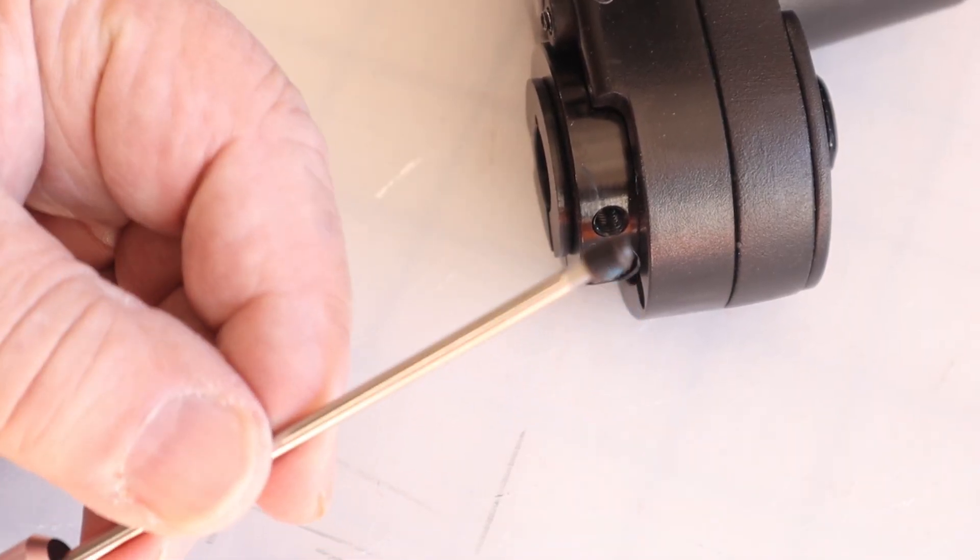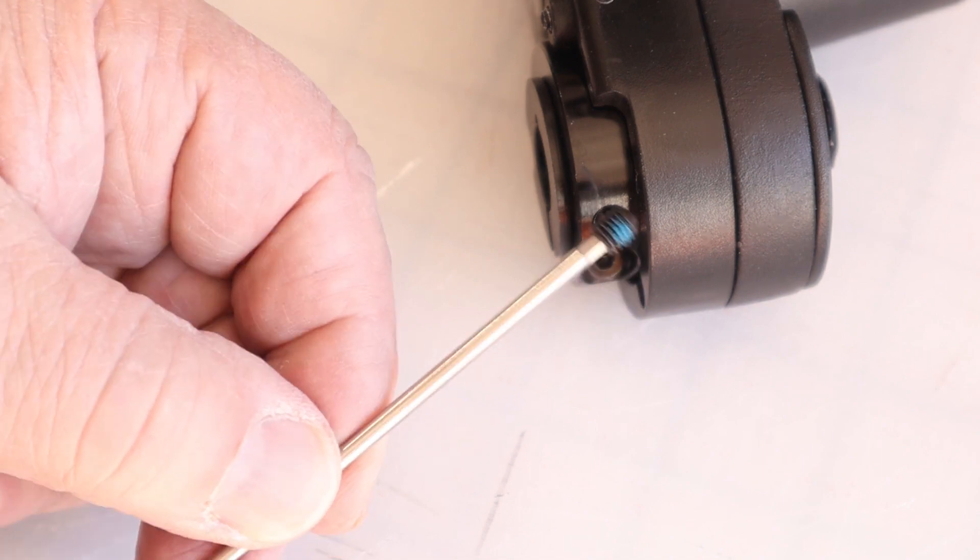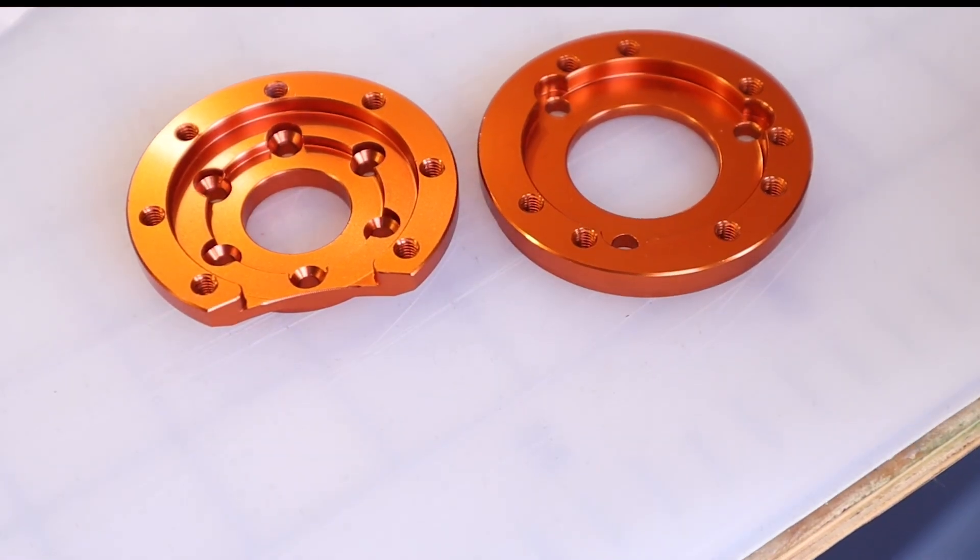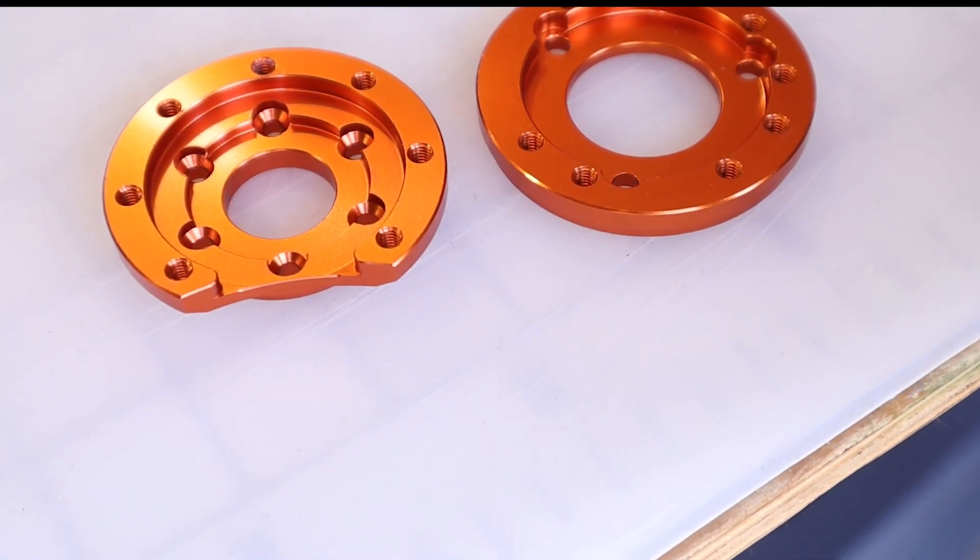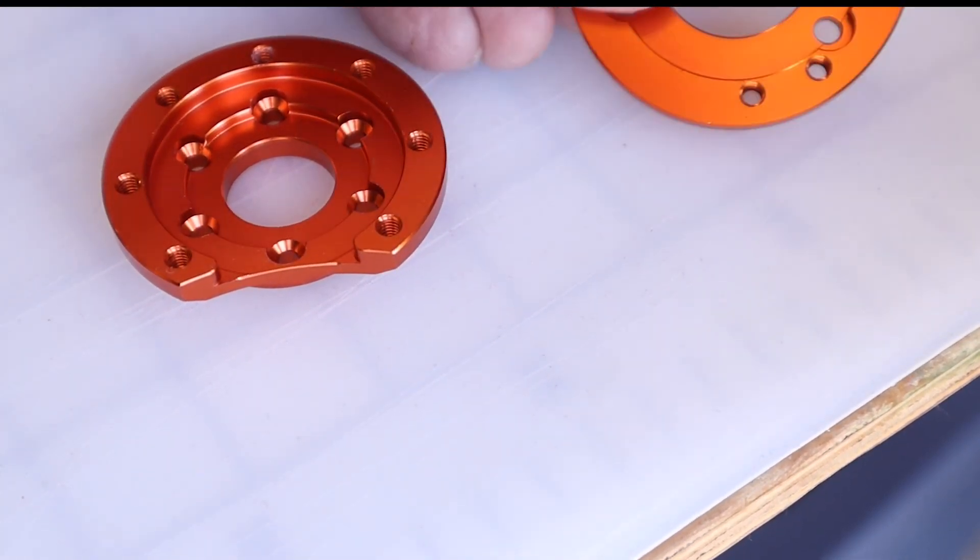This little grub screw is important in that it's one of the things that clamps the focus motor to the focusing shaft in the telescope. These two included mounting plates adapt the Celestron focus motor to different telescopes. The one on the left with the cutout is the one for my 6SE.